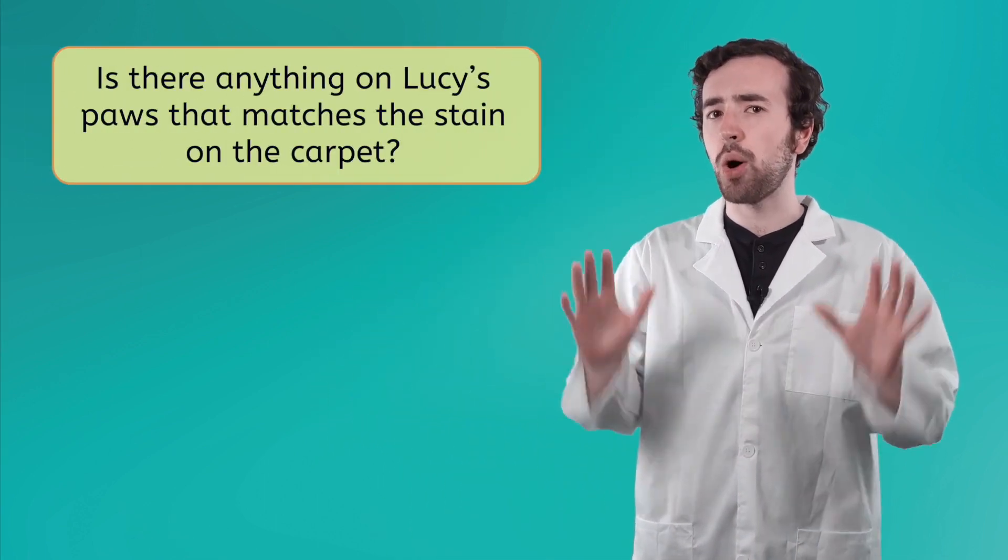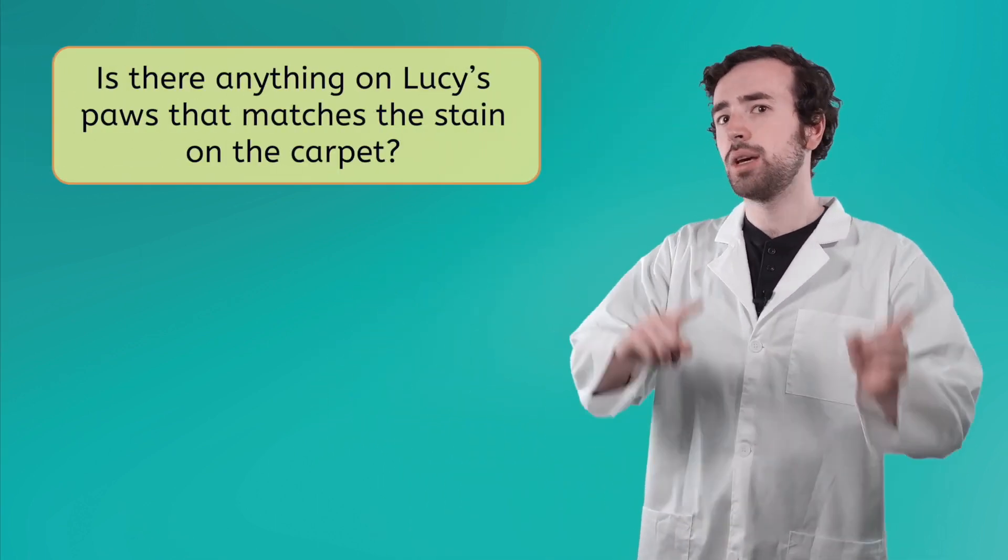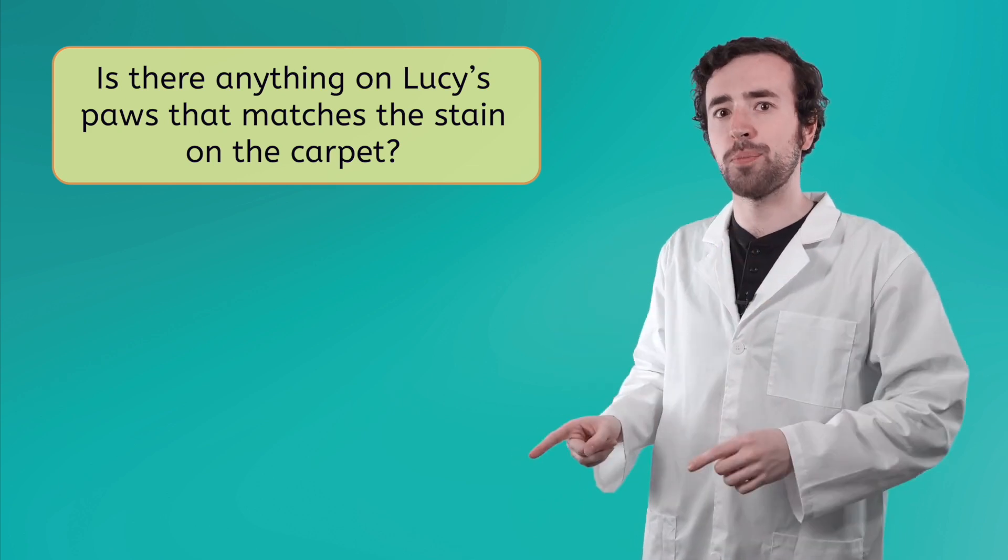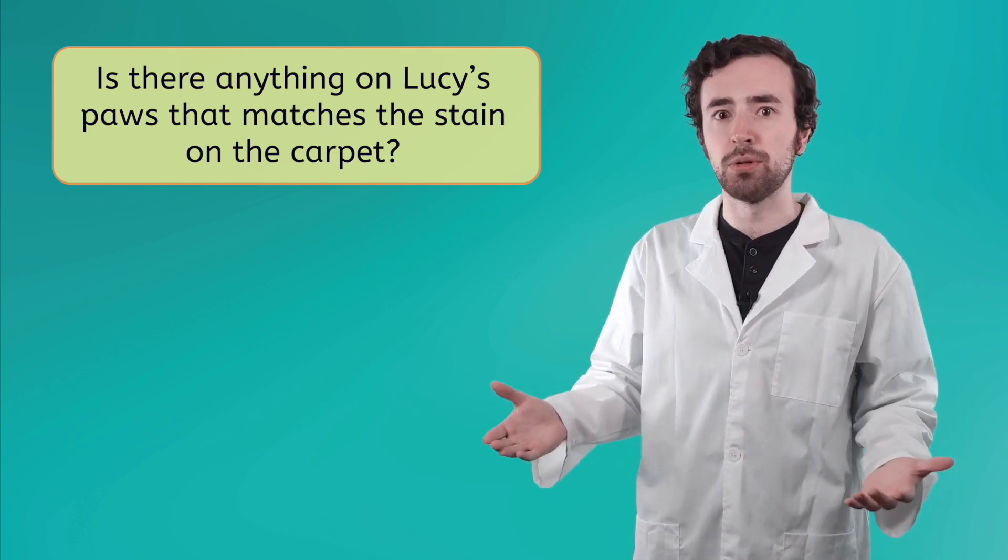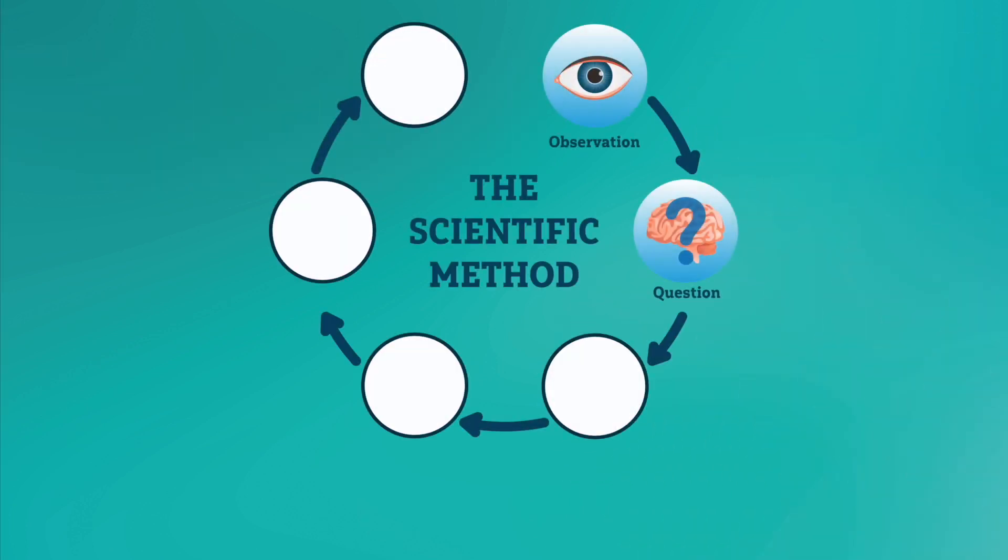Given everything that we've observed and inferred, what's a question we could ask here that is specific, observable, and testable that'll help us get to the bottom of this mystery stain? Well, if we suspect that it was Lucy's paws that caused the stain, and we suspect that her paws are dirty right now, why don't we ask, Does Lucy have anything on her paws right now that match the stain on the carpet? That's simple, observable, and easily testable. So that brings us to our next step, making a hypothesis.